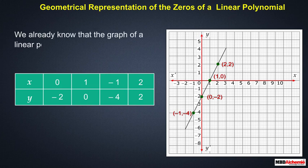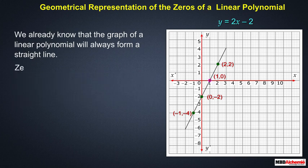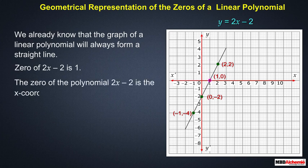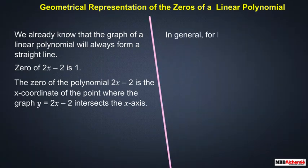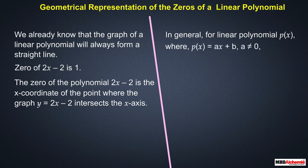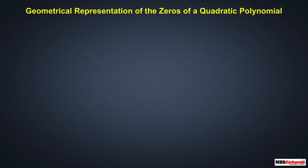We already know that the graph of a linear polynomial will always form a straight line. We see that the graph of y = 2x − 2 intersects the x-axis exactly at (1, 0). The zero of 2x − 2 is 1, so the zero of the polynomial is the x-coordinate of the point where the graph intersects the x-axis. In general, for a linear polynomial p(x) = ax + b where a ≠ 0, the zero of the polynomial occurs at only one point: (−b/a, 0).